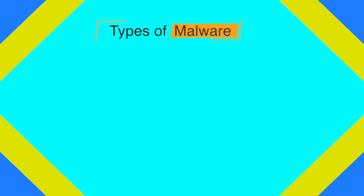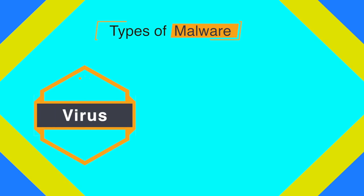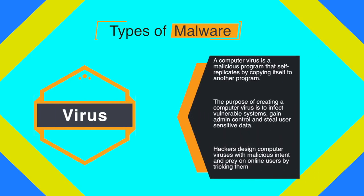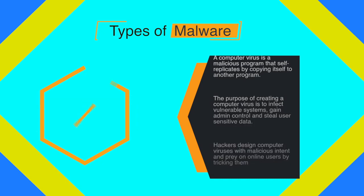The first type of malware is known as a virus. Viruses are a particular piece of code written with malicious intent, and they need user action to execute. When they execute, they can damage your system, corrupt your file system, execute malicious instructions, or be controlled by the person who created them.